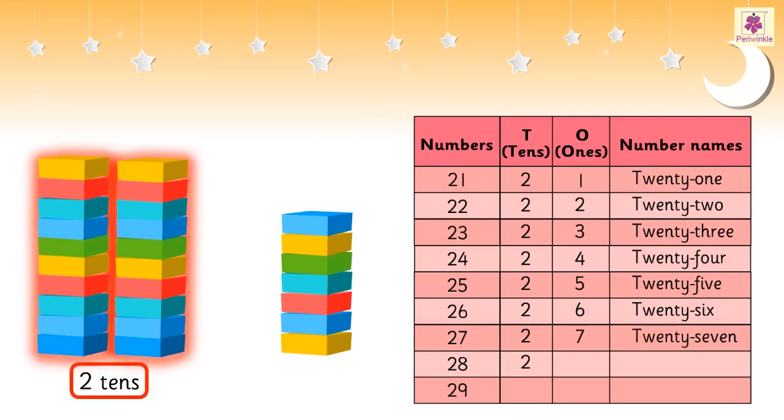Two tens and eight ones is 28. Two tens and nine ones is 29.